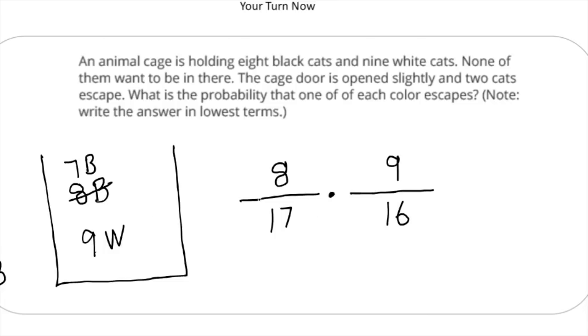So finally, to get the probability of one of each cat escaping, you now multiply. So eight times nine will give us 72. And then 17 times 16 will give us 272. But the direction stated that we want to have it in lowest terms. So if you notice, we can cross reduce the fraction, right? So we can make this a one and make the 16 a two. And that saves a lot of time. So now one times nine gives us nine, and 17 times two gives us 34. So there is a nine out of 34 chance that a black cat will escape and then a white cat will escape as the first two cats to leave the cage. Alright, how'd you do?